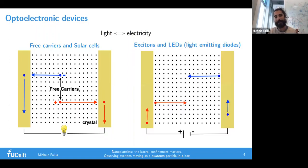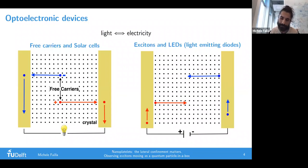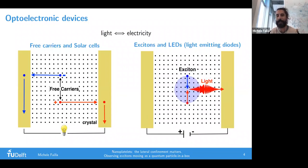Vice versa, how you use excitons in LEDs is that you are injecting electrons and holes from the electrodes into the crystal. Again, these electrons and holes can find each other forming an exciton, and at the end the exciton recombines and emits light.